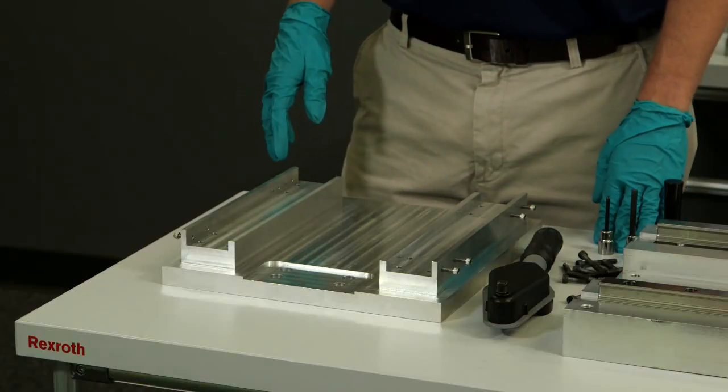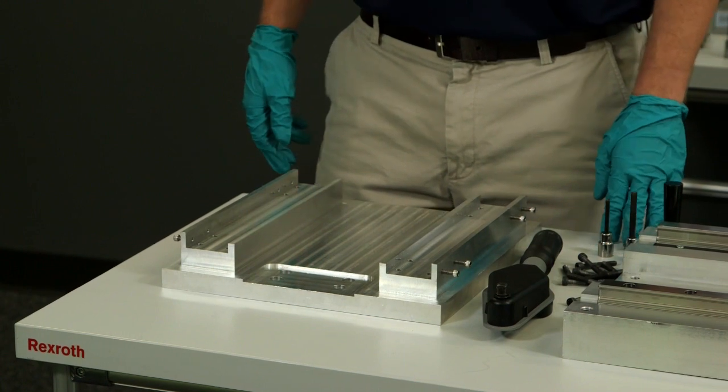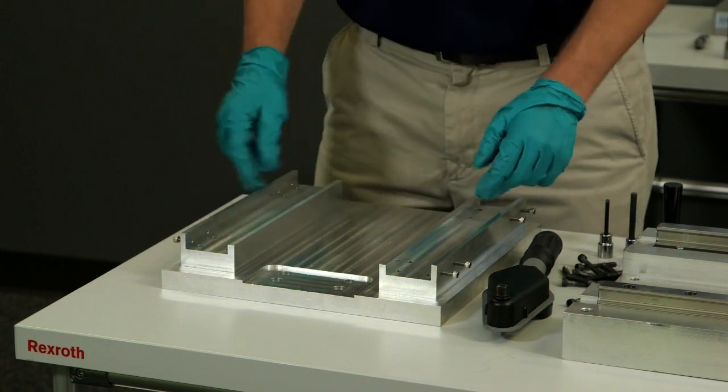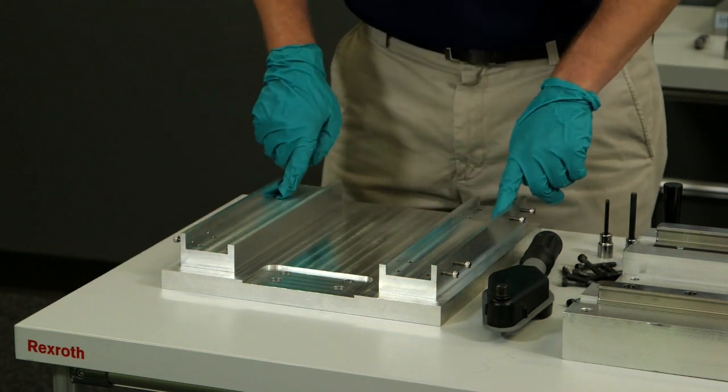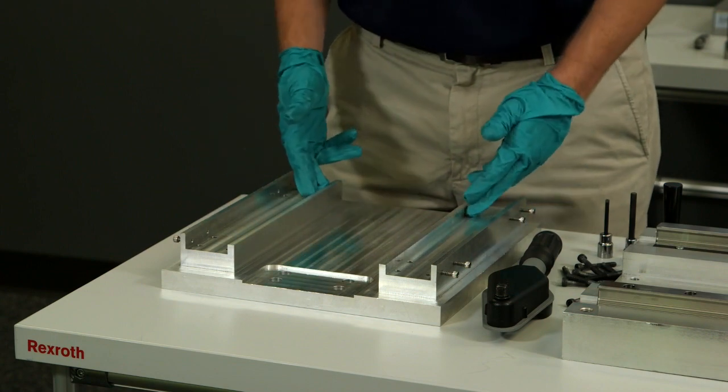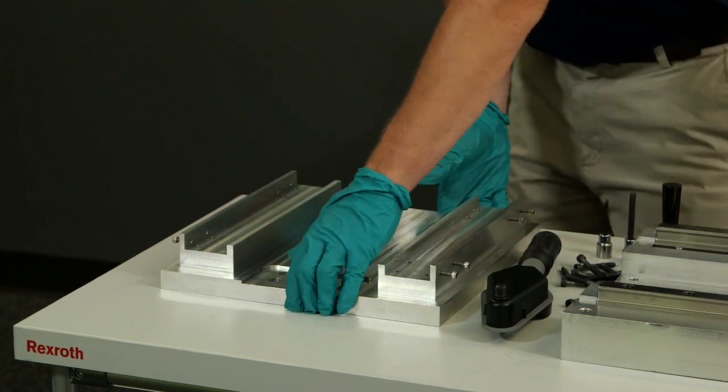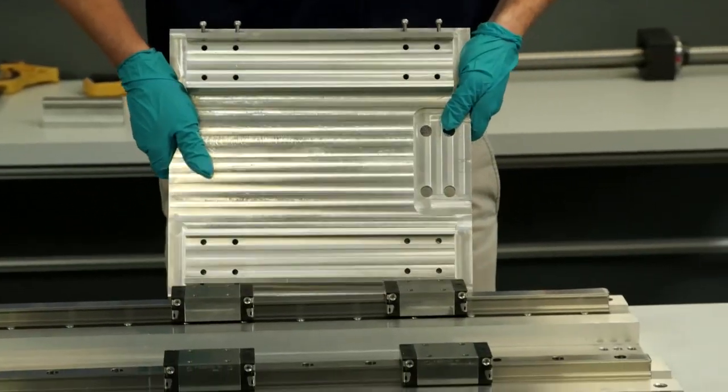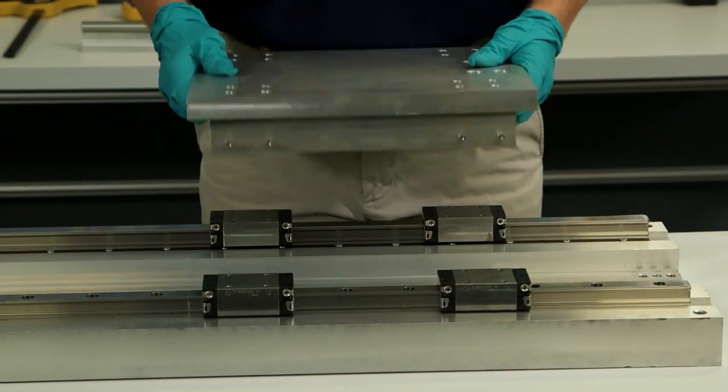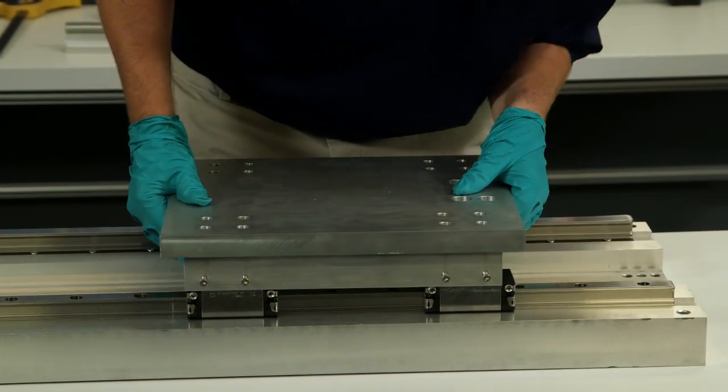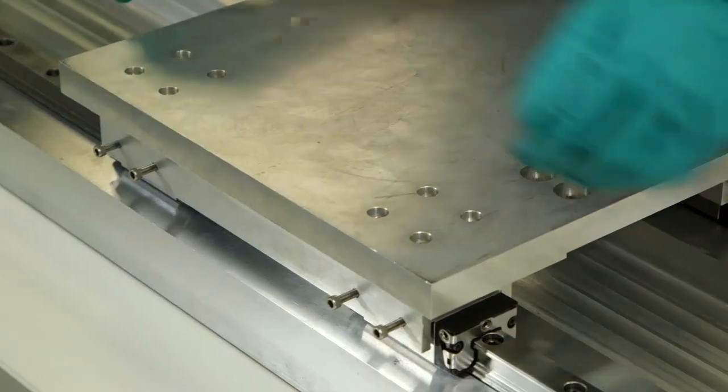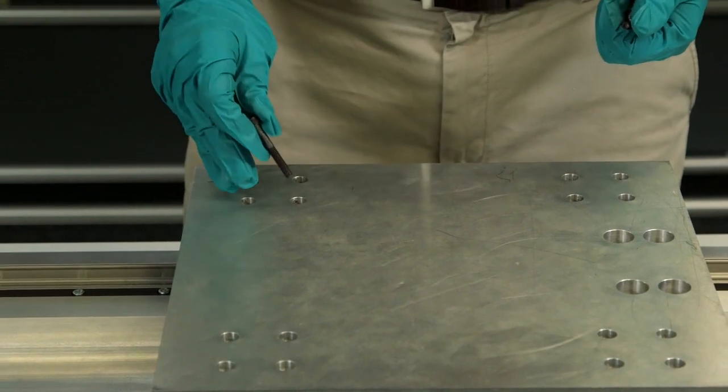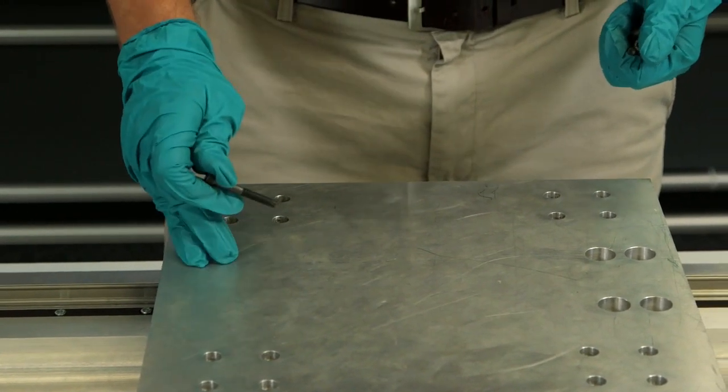So now it's time to install our carriage block. As you'll see, I have precision reference edges here on the inside. And on the outside, I'm using set screws to push the blocks up against the reference edge of the carriage. Now I'm going to finger tighten my bolts that are connecting my carriage plate to my runner blocks.